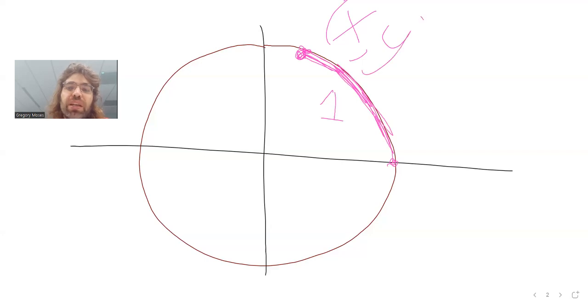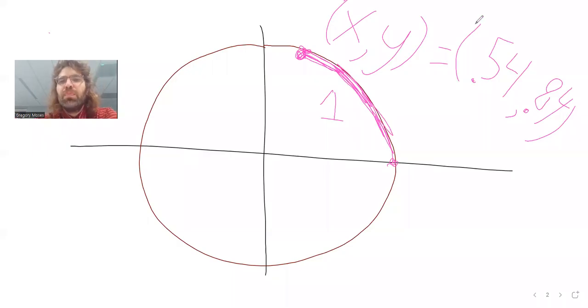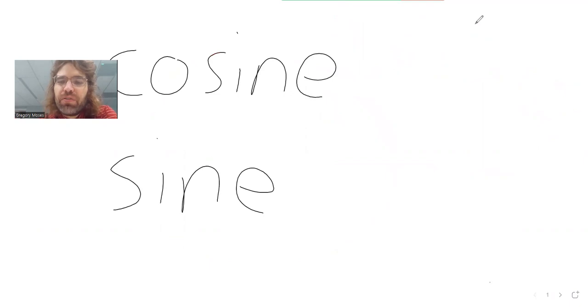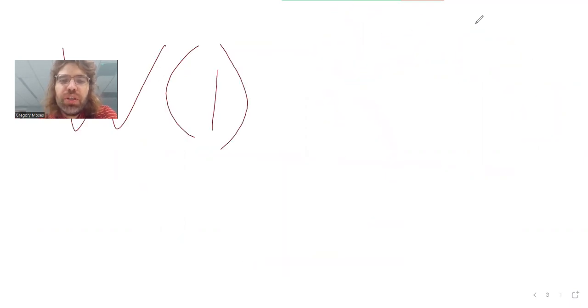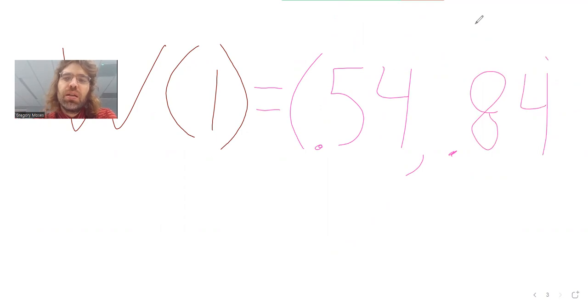The place we wind up, it's a point x comma y. In this particular case, we wind up at the point 0.54, 0.84. So this wrapping function takes a number as its input and gives us a point back again.